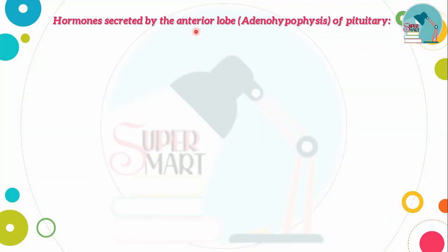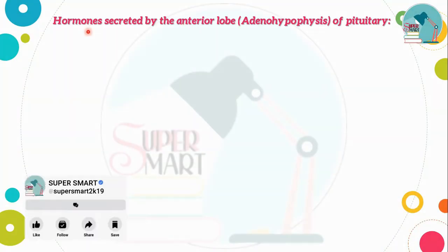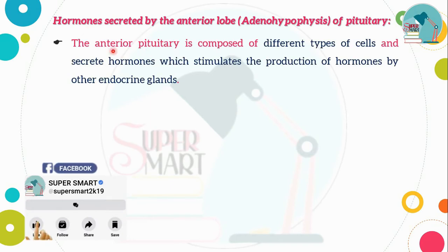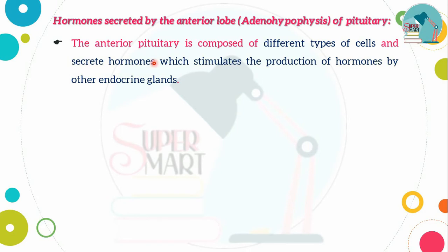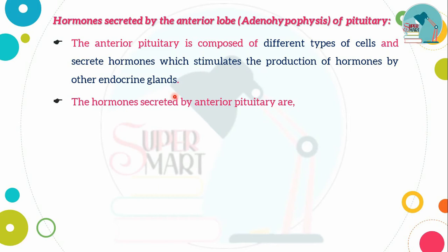The pituitary gland is called the master gland because it controls the process of other endocrine glands. The anterior lobe secretes several types of hormones, with different cells secreting one or two hormones each.